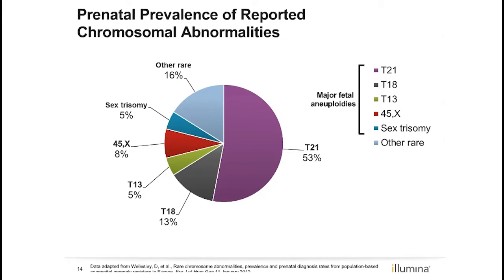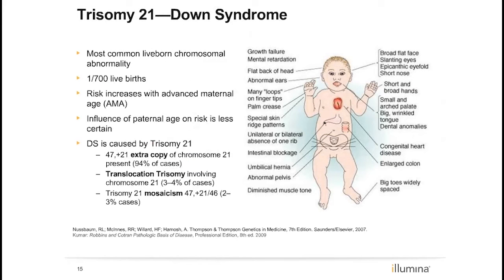Down syndrome, also known as trisomy 21, is the most prevalent aneuploidy. The incidence is 1 in 700, with a clear correlation with maternal age. 2 to 3% of cases of Down syndrome will be mosaic. Individuals with Down syndrome show many characteristics, including facial features, growth failure, and appearance of hands. Additionally, congenital heart disease, kidney, and intestinal problems are common. Various degrees of developmental delay and intellectual disability also occur.